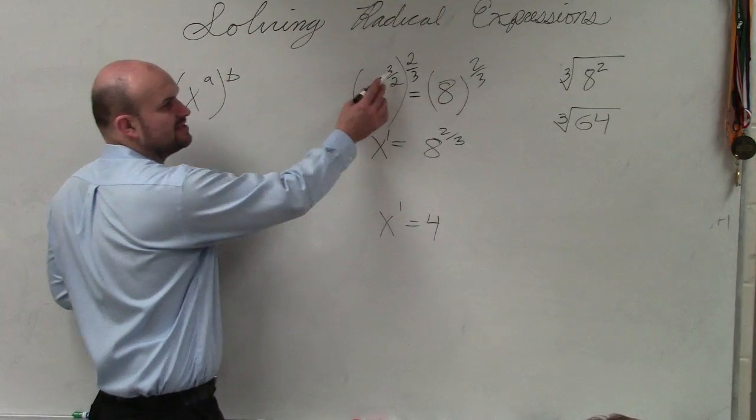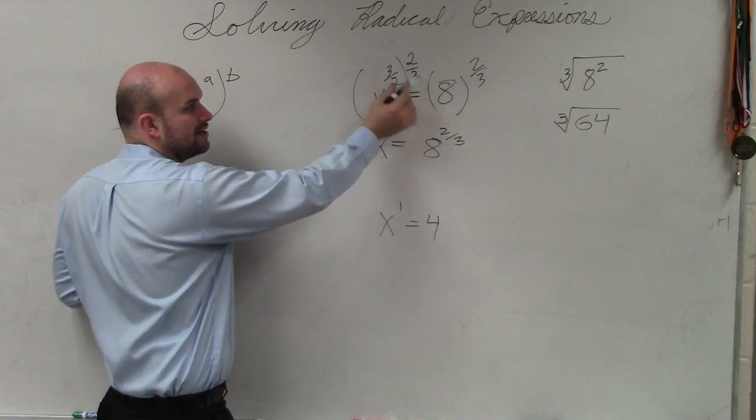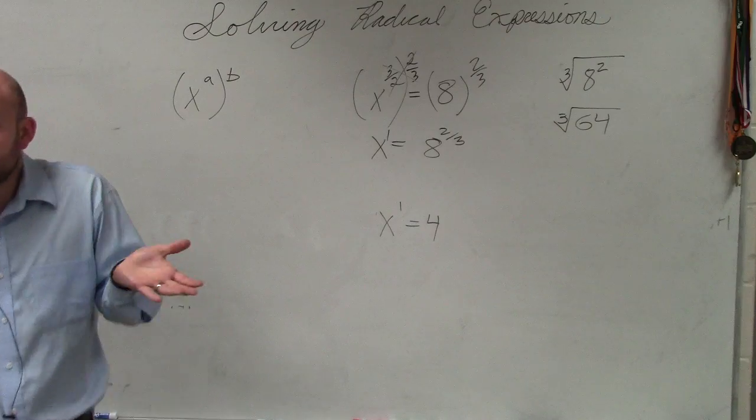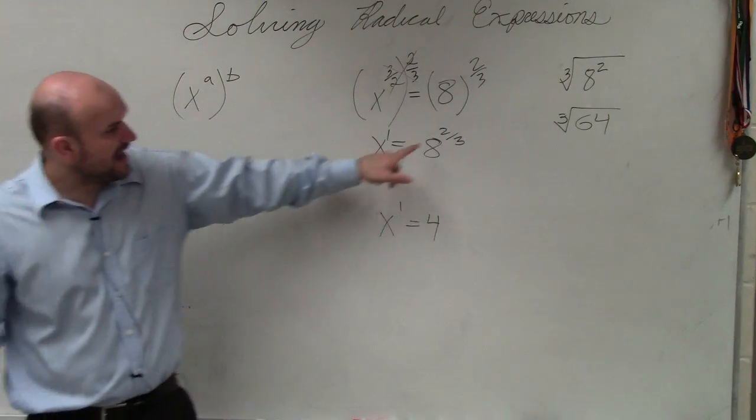If you guys notice, the reason why this works again, because when you have the numerator and the denominator that are the same, they divide to 1, right? Those divide to 1. That's why we get x to the first power.